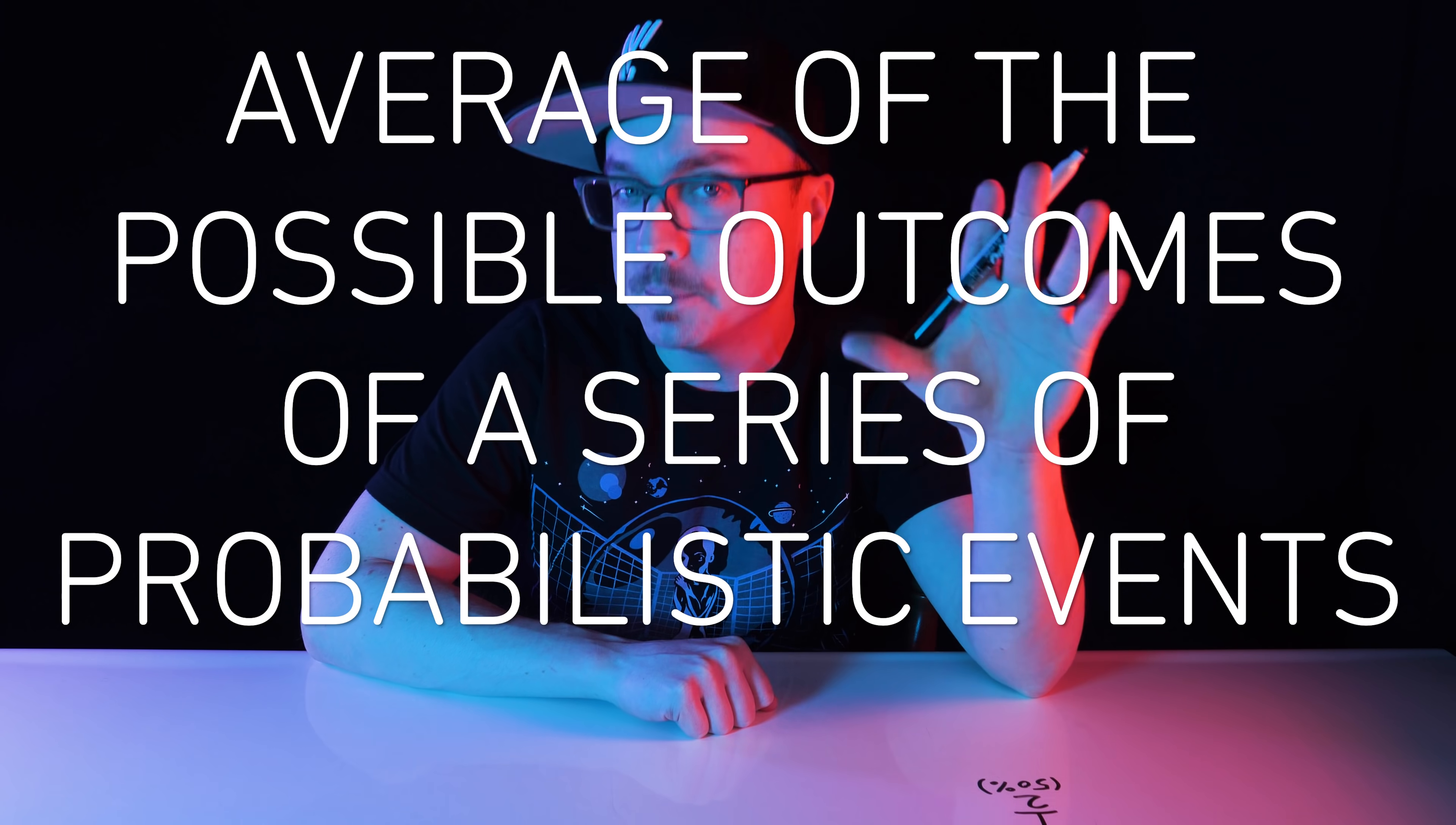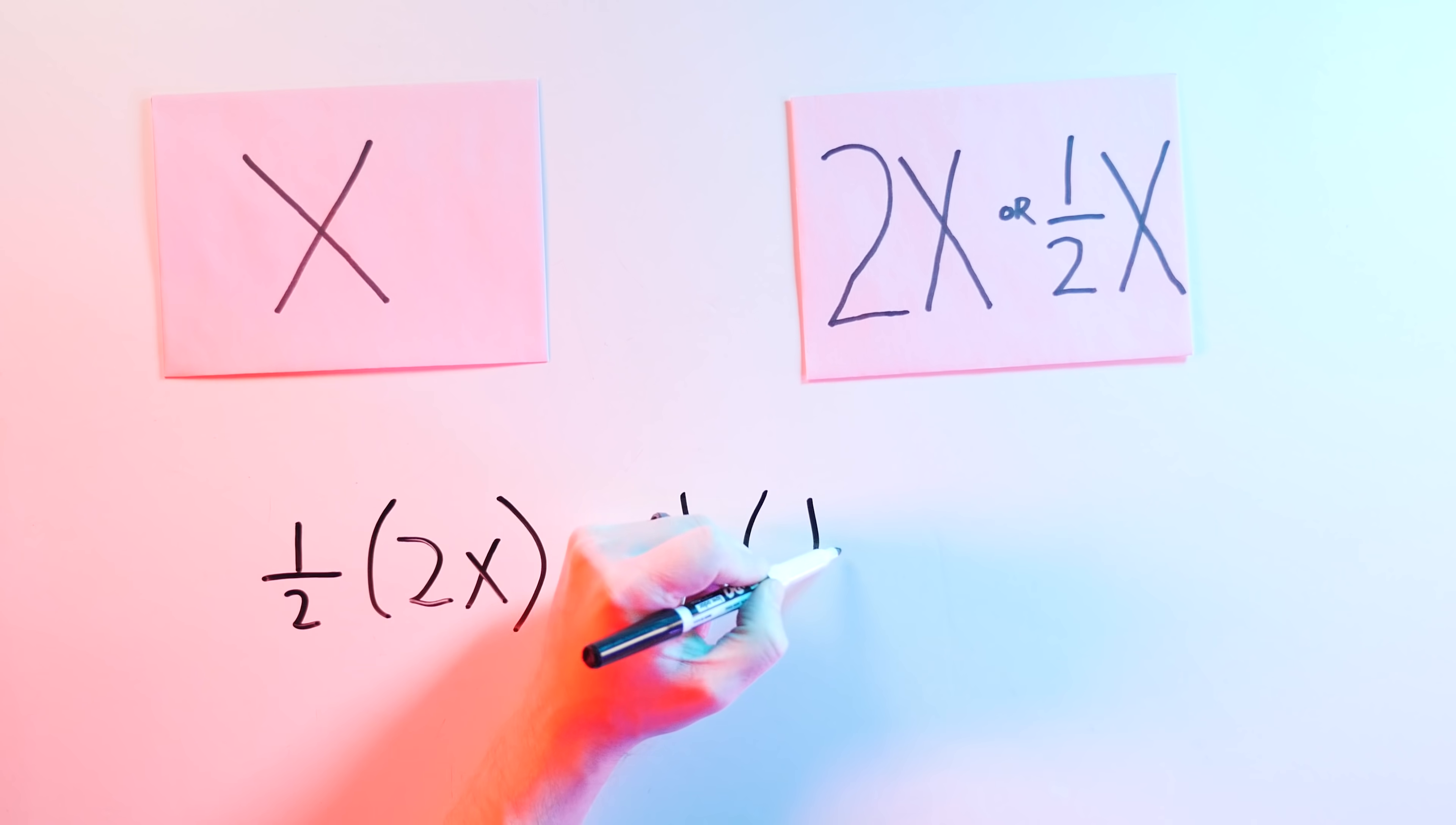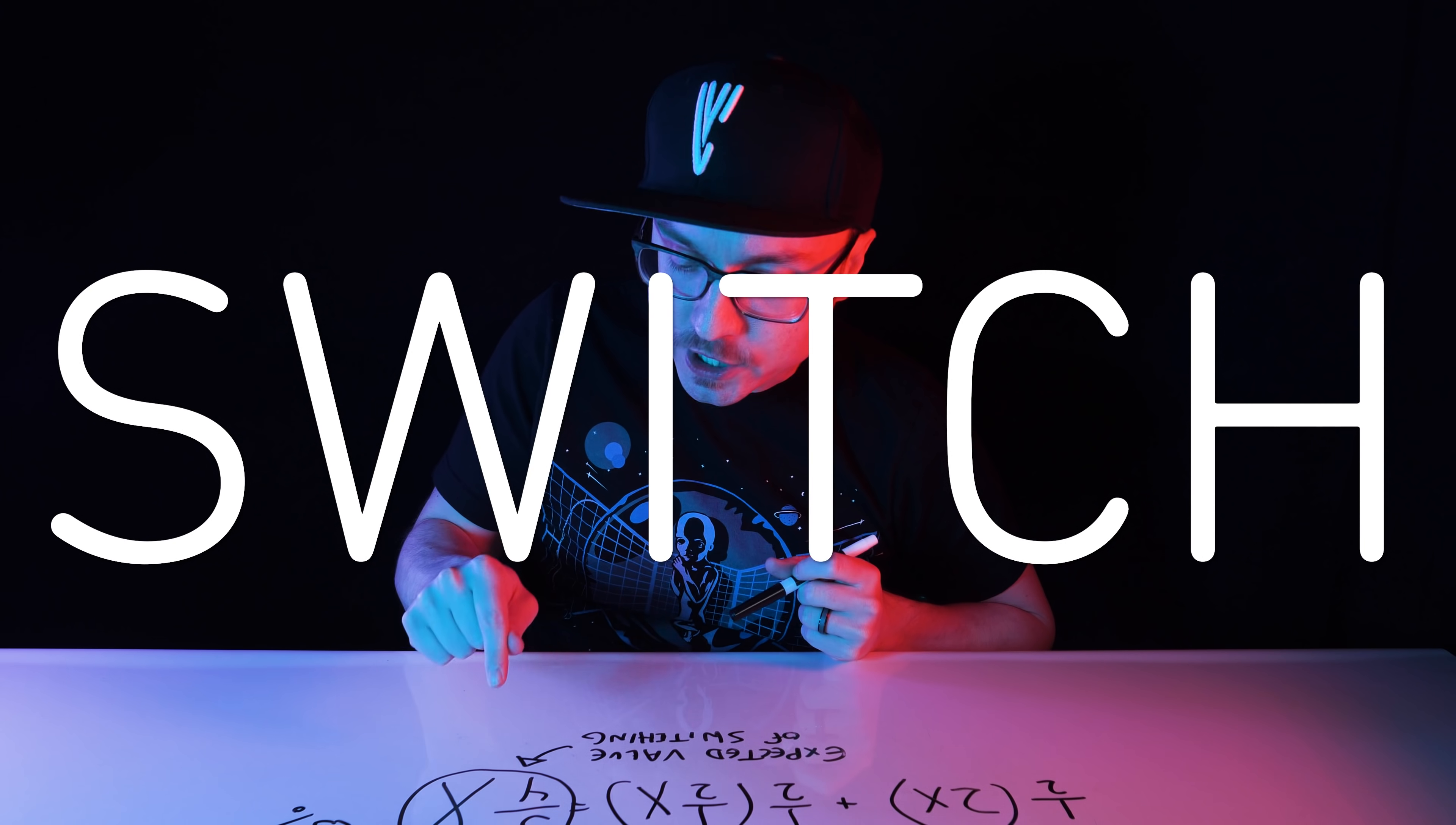I've talked about expected value in a few other Vsauce 2 videos. It's the average of the possible outcomes of a series of probabilistic events, which we can use to identify the most advantageous course of action. So to find the expected value of the envelope we didn't choose, we add the value of the only two possibilities weighted by their probability. Like this. 1 over 2 times 2X plus 1 over 2 times 1 half X equals 5 over 4X.